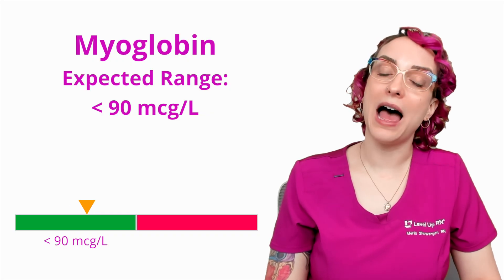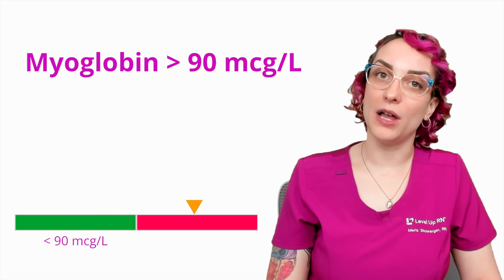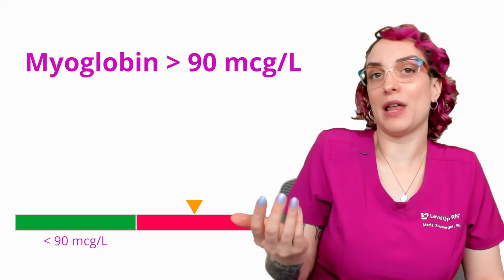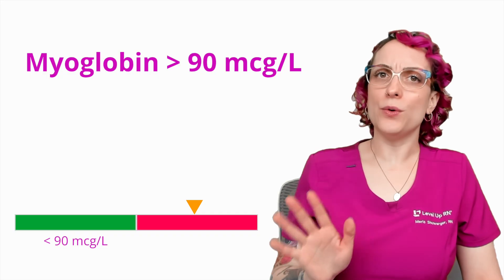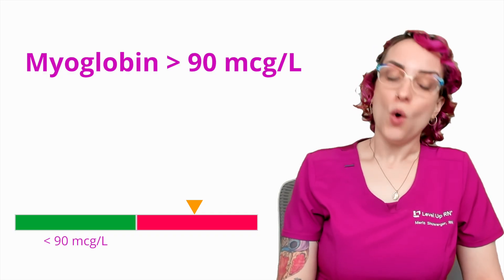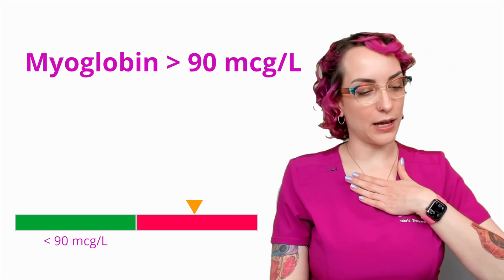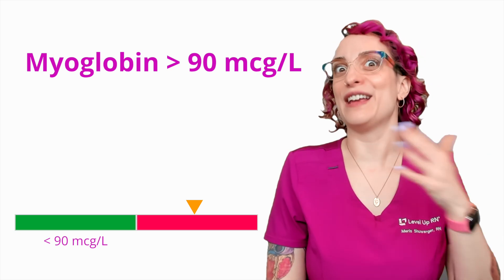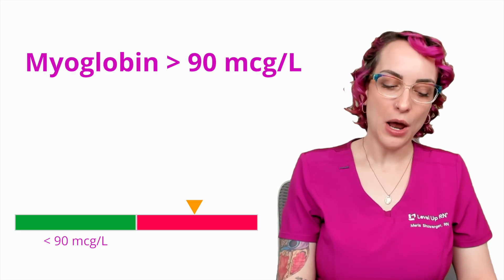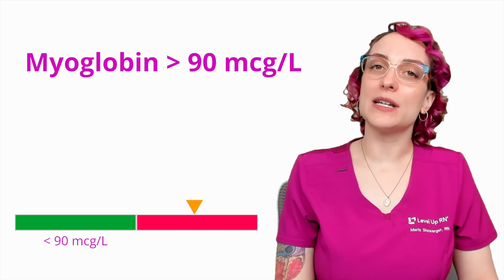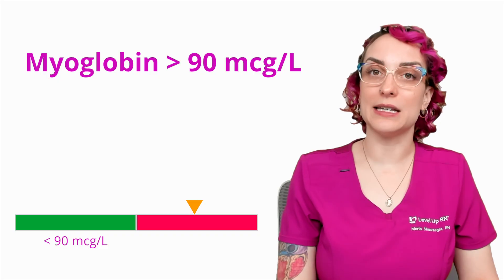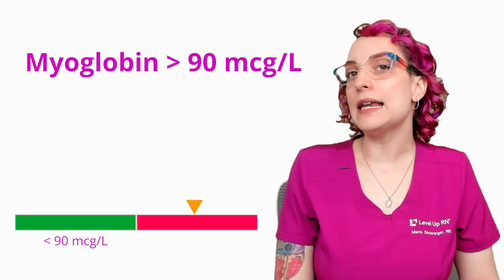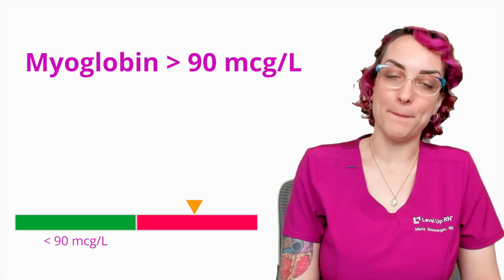What if myoglobin is elevated in the blood — if your patient's level is coming back way higher than expected? Well, this could indicate myocardial infarction. It doesn't rule out the heart, but it also doesn't rule out any of those other muscles. So we need to do more investigation. What it's telling us is that there is some variety of muscle damage or inflammation affecting the patient's body, and we need the full clinical picture to determine what that means.